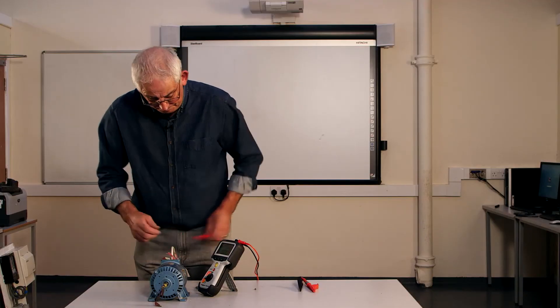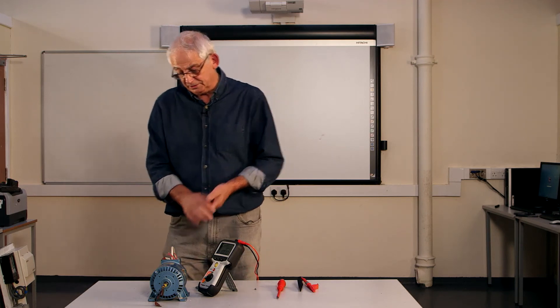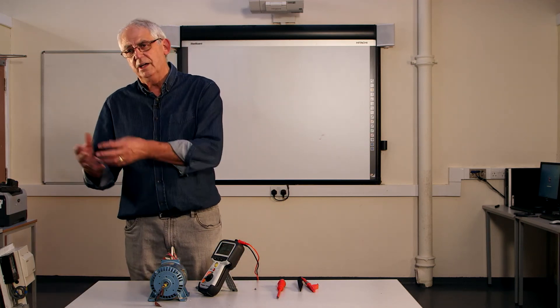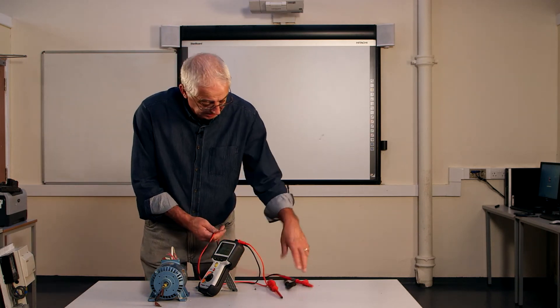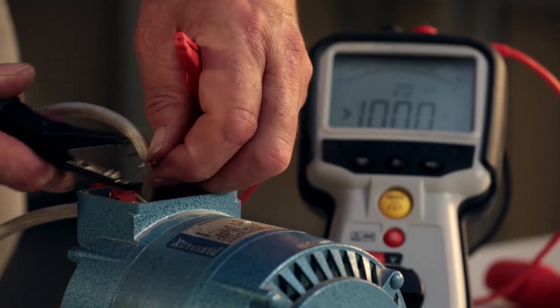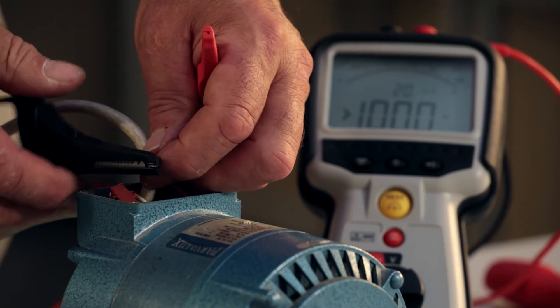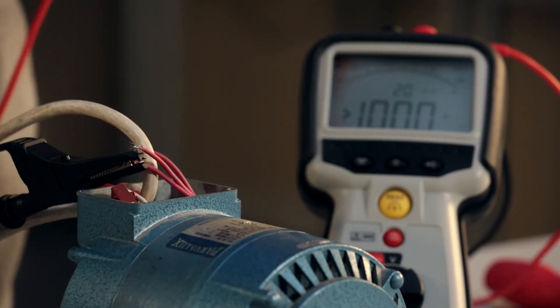Having connected that up, I now need to do an insulation resistance test on the motor to make sure that the windings aren't touching the sides of the motor. So nice easy way of doing that. If I just connect to one of these, it's going to read through all of the windings because of course they're joined together at the other end.